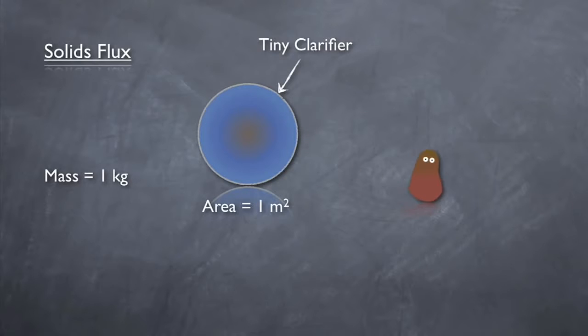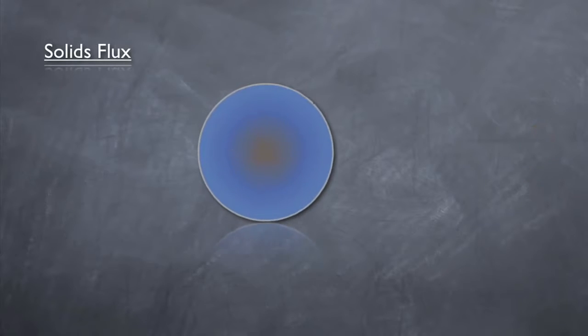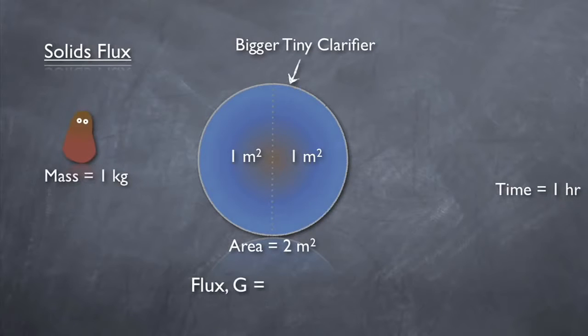The flux in this case would be equal to the total mass of solids passing through the clarifier in one hour. So if one kilogram of mass were to pass through in one hour, the flux would be one kilogram per meter squared hour. Now if the surface area of the tiny clarifier was doubled, but the same mass of solids passed through in the same amount of time, the solids flux would be half. Why? Because it is normalized to one square meter of clarifier area.